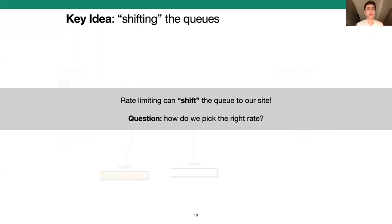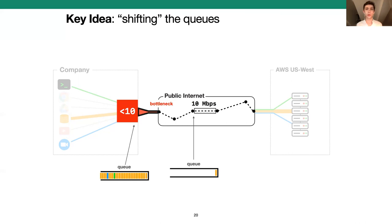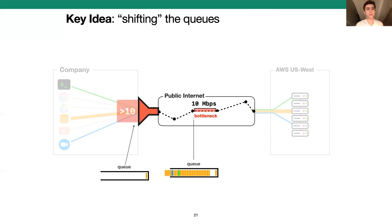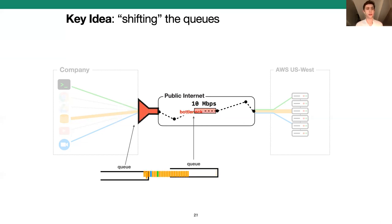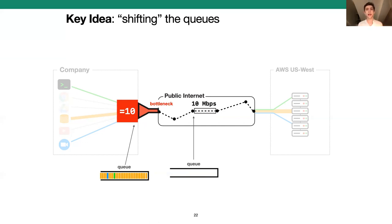But how do we pick the right rate? Suppose the bottleneck link is 10 megabits per second and our company's uplink to the internet is much higher. If we rate limit to anything less than 10, we will build a queue but waste bandwidth. If we send anything more than 10, we won't build a queue at all and we're right back where we started, unable to schedule. So to maximize throughput and build a queue at the same time, we want to send at exactly 10. But of course, we don't know that the bottleneck is 10, and it's not static — it changes constantly as network conditions evolve.